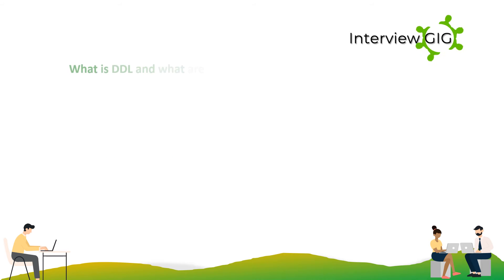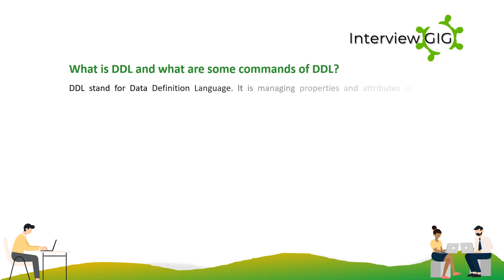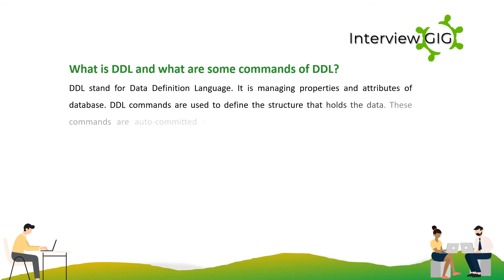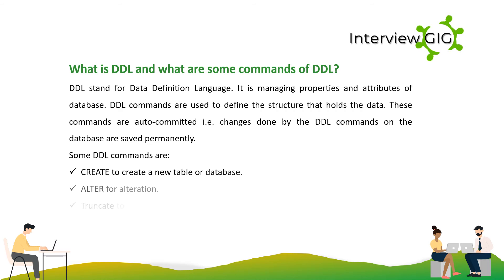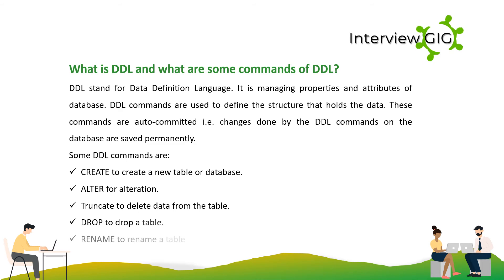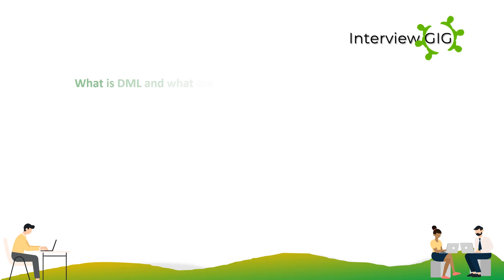DDL stands for Data Definition Language. It manages properties and attributes of a database. DDL commands are used to define the structure that holds the data; changes done by DDL commands on the database are saved permanently. Some DDL commands are: Create — to create a new table or database; Alter — for alteration; Truncate — to delete data from the table; Drop — to drop a table; Rename — to rename a table.